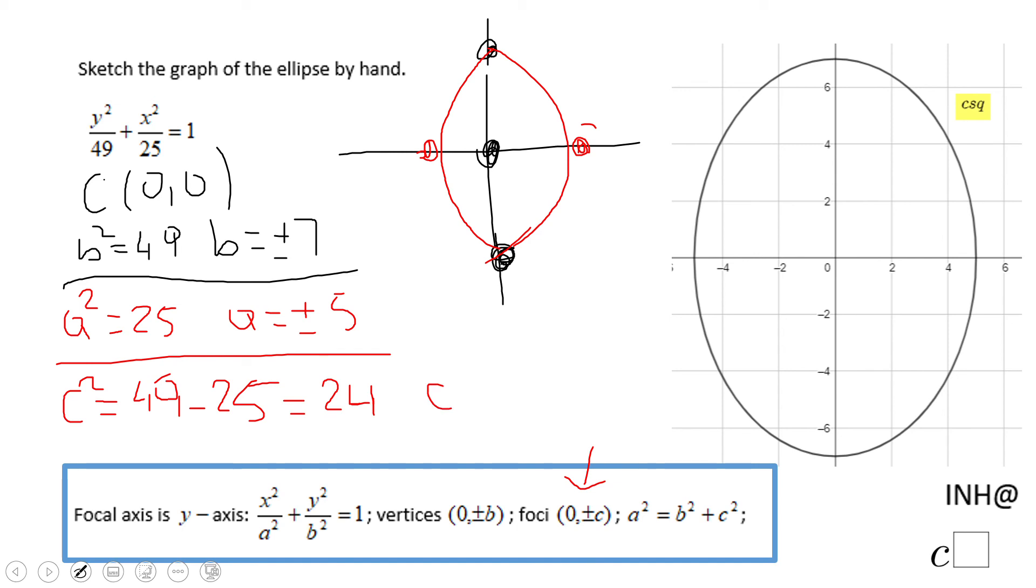C will be plus or minus square root of 24, which is 2 square root of 6.